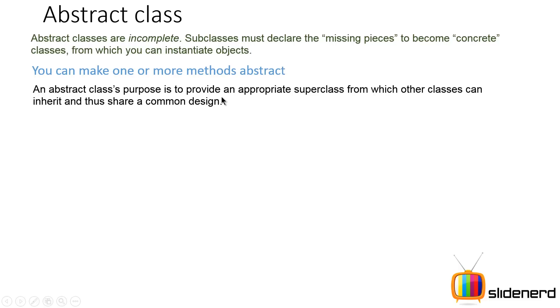So an abstract class's purpose is to provide an appropriate superclass from which all other classes can inherit and share a common design. Now what does this mean, common design? Now I'll be talking about this one particular point very particularly in the next video with a very simple example that you guys will understand very much and you will understand why we need abstract classes at that time.